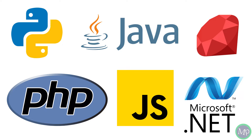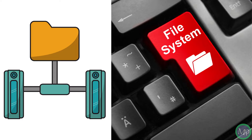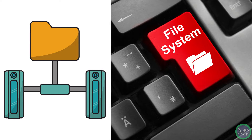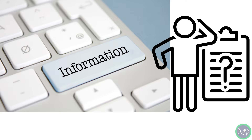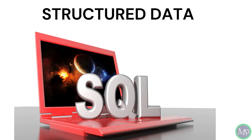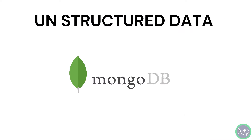We create a server using a programming language. For the database, we previously stored information in file-based systems, which had inconsistent formats, multiple-user access issues, and many security problems. Now, databases solve these problems. There are two types: SQL and NoSQL. SQL is used for structured data and stores data in table format — for example, Oracle, MySQL, Postgres. For unstructured data, we use NoSQL — for example, MongoDB.